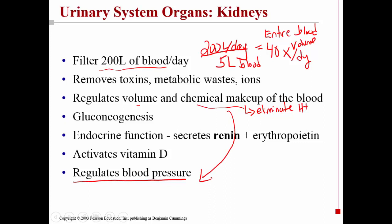The kidney also does things that people don't typically think of as a role of the urinary system — for example, gluconeogenesis. Breaking the word apart: 'gluco' refers to glucose, 'neo' means new, and 'genesis' means the beginning. So gluconeogenesis is the production of glucose from its building blocks. The kidney doesn't take polysaccharides and break them down; it actually creates glucose from its components.